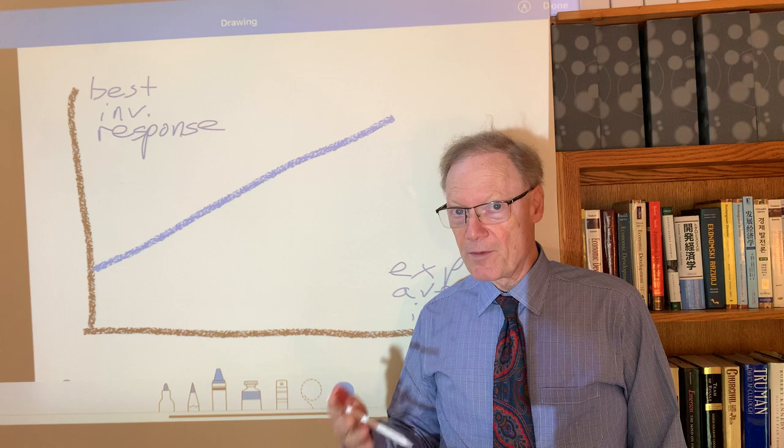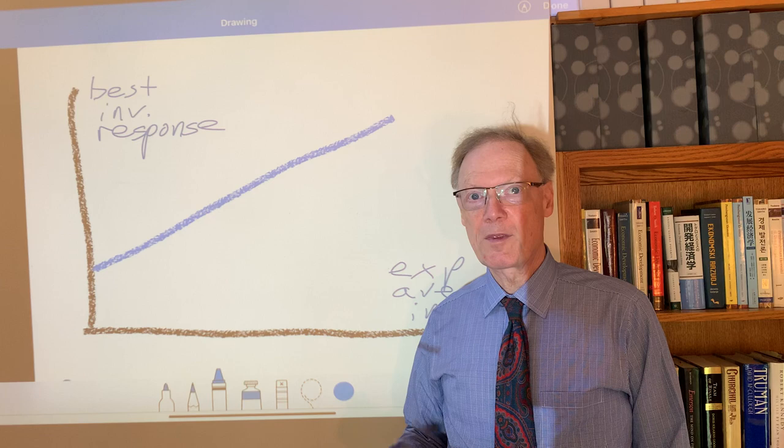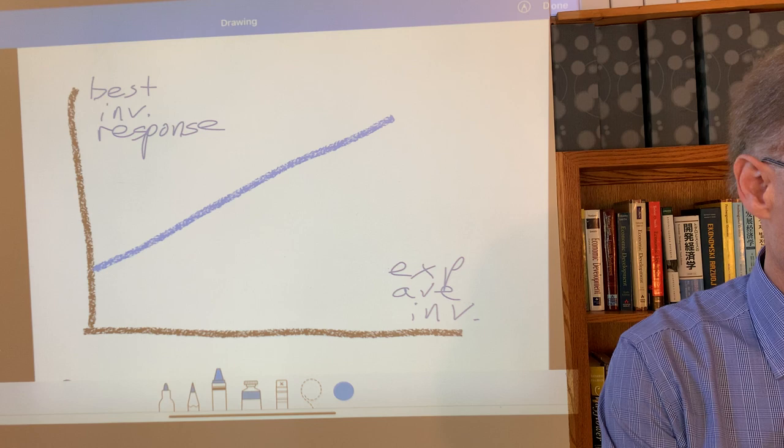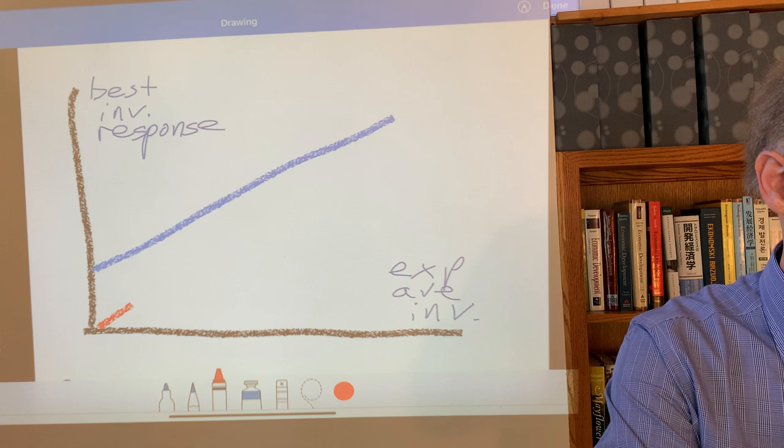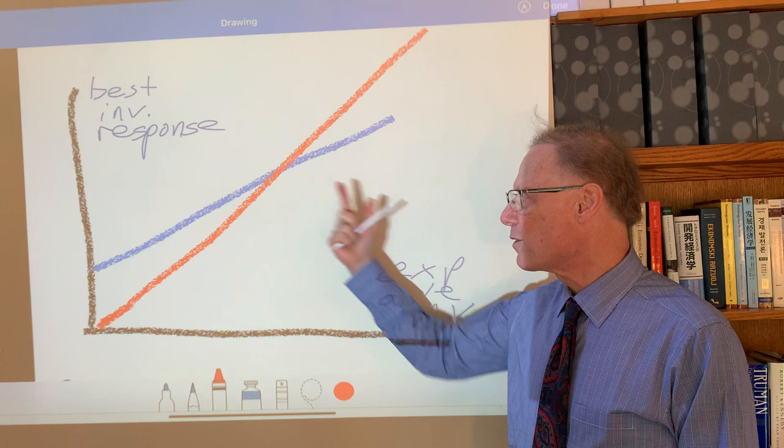So how do we think about equilibria in this situation? The common way to represent it graphically is very straightforward. It's with a 45 degree line.